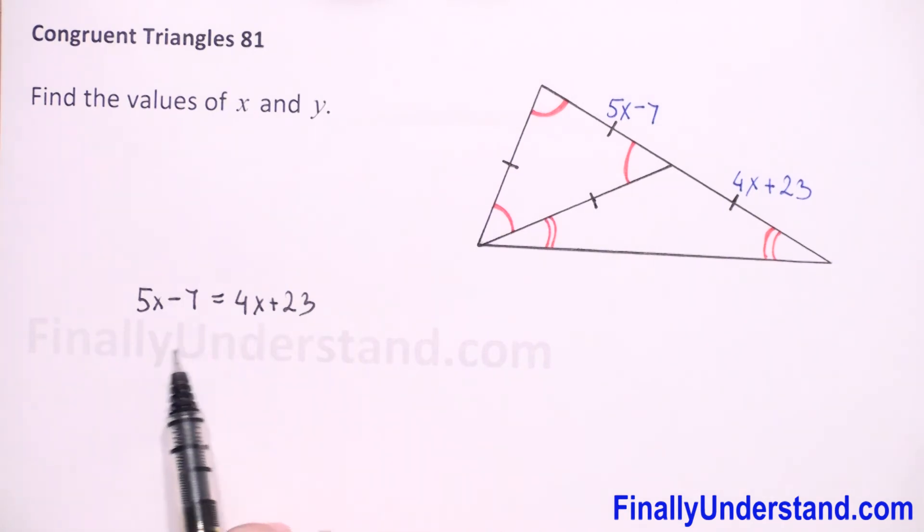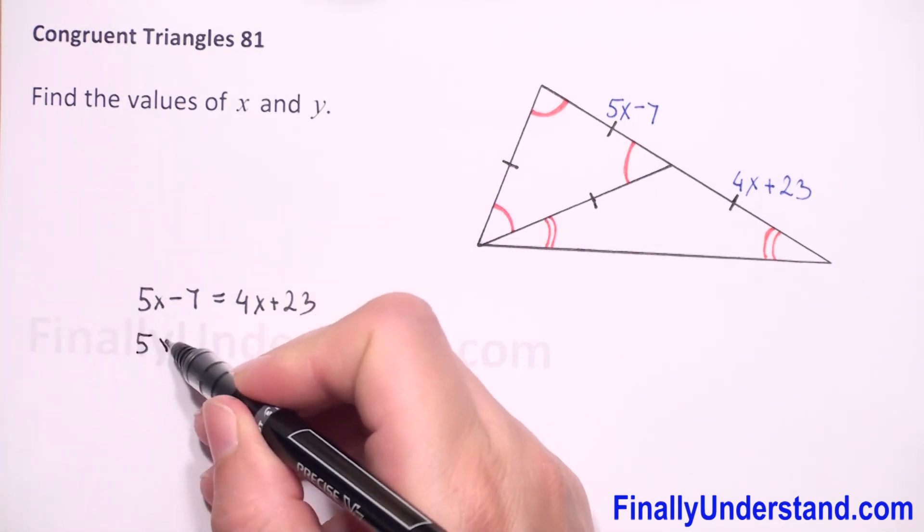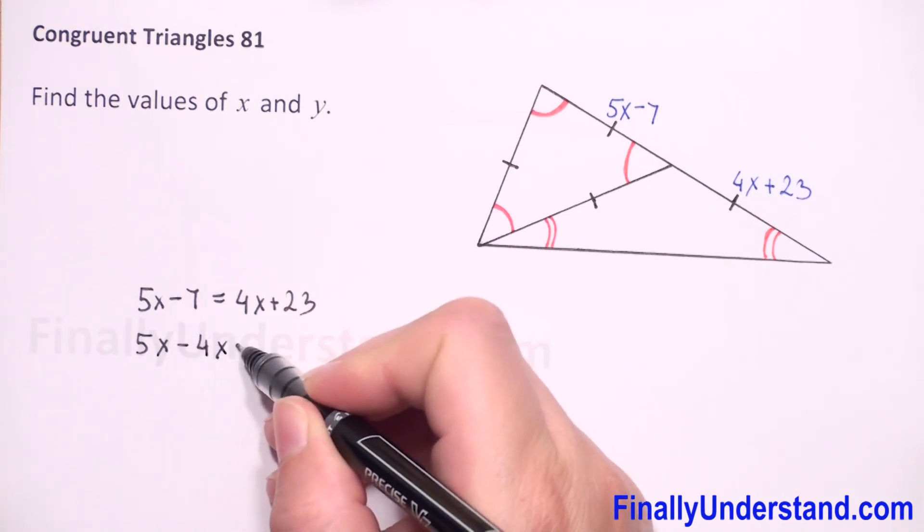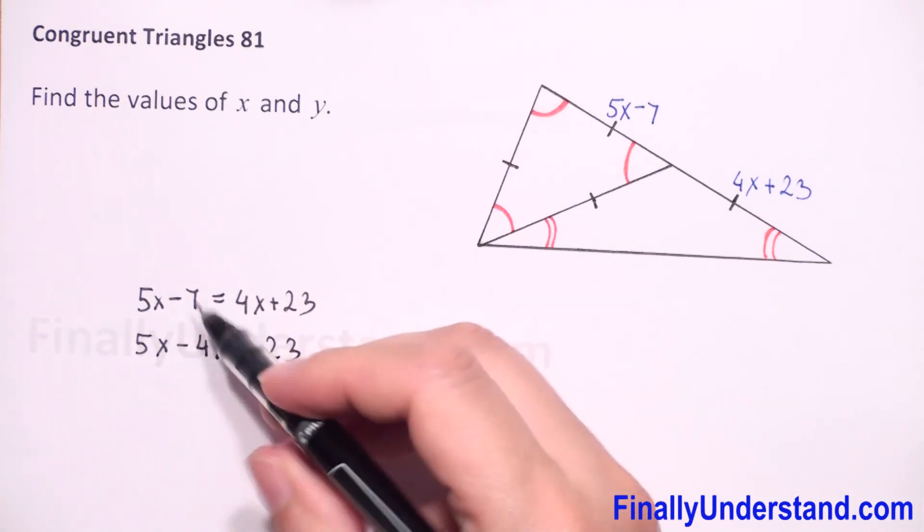We have one unknown. I will move 4x to the left side, so we have 5x minus 4x is equal 23, and negative 7 to the right, so it will be plus 7.